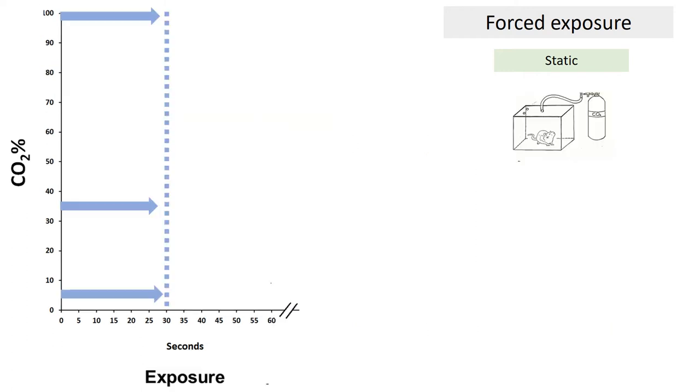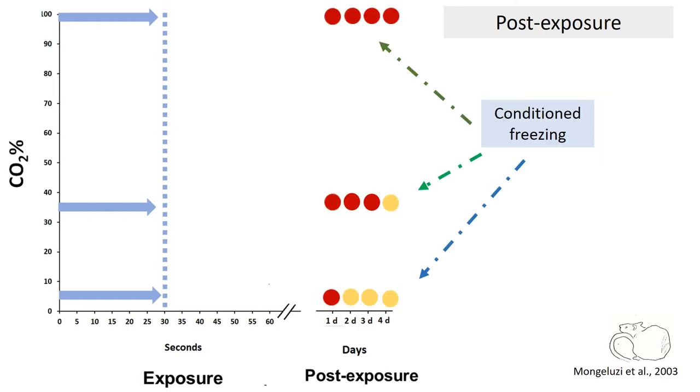Forced exposure to CO2 static concentrations of 5%, 35%, and 100% induces conditioning in rats one day post-exposure. The level of conditioning increases with concentration. Conditioning from exposure to 35% to 100% CO2 resists extinction during 3 to 4 days after exposure.